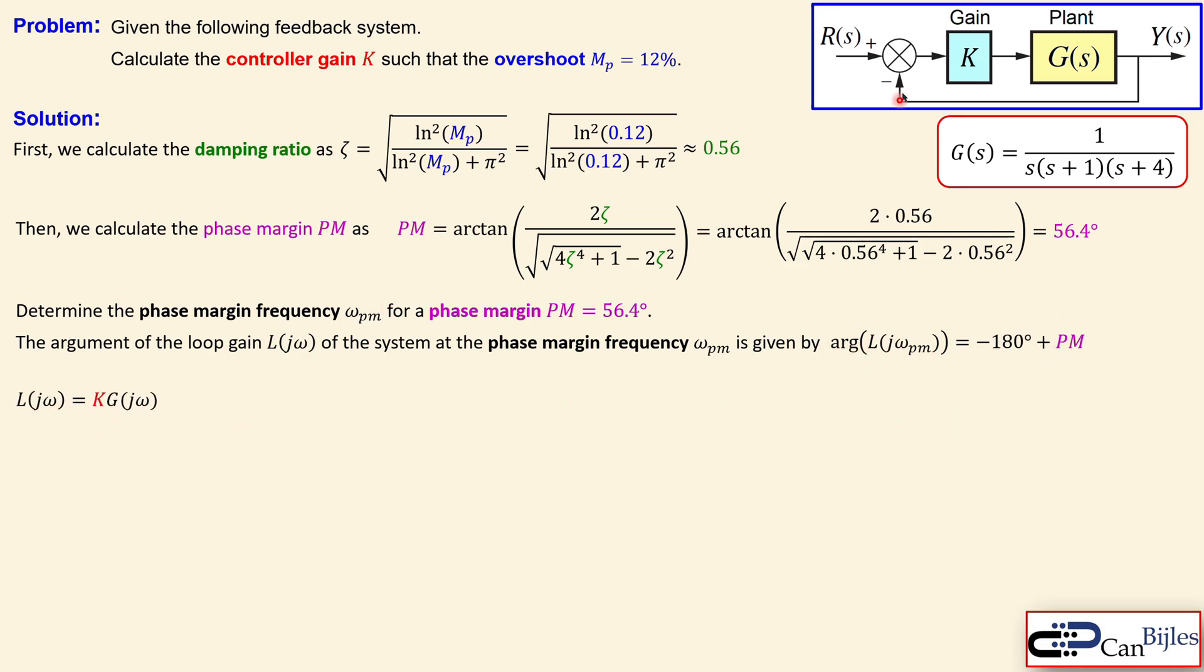What is loop transfer function? That is really the complete loop you make here. That is the gain times the plant, shown here in jω domain. So we convert everything from s to jω. The unknown here is K. We now determine the phase contribution of this transfer function at the specific frequency. The condition for the phase is minus 180 degrees plus the phase margin. So this must be equal to minus 123.6 degrees.